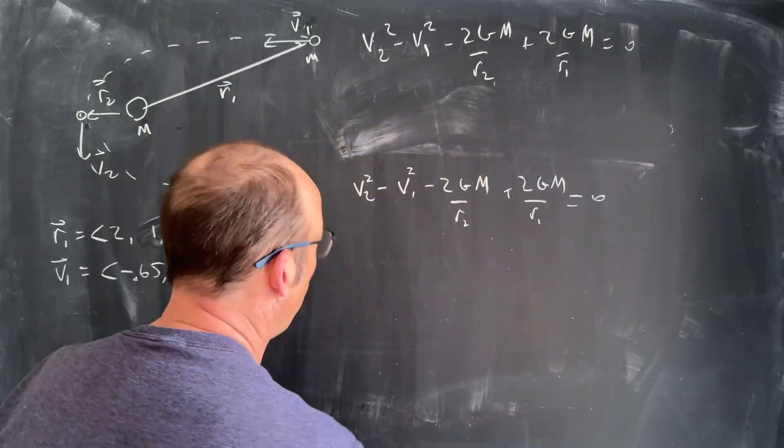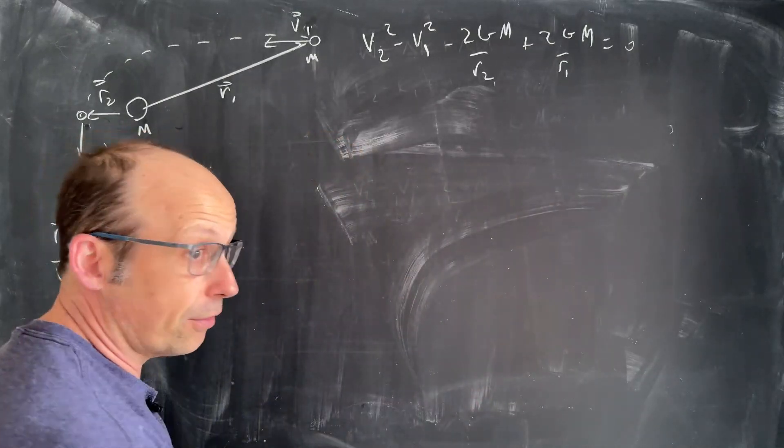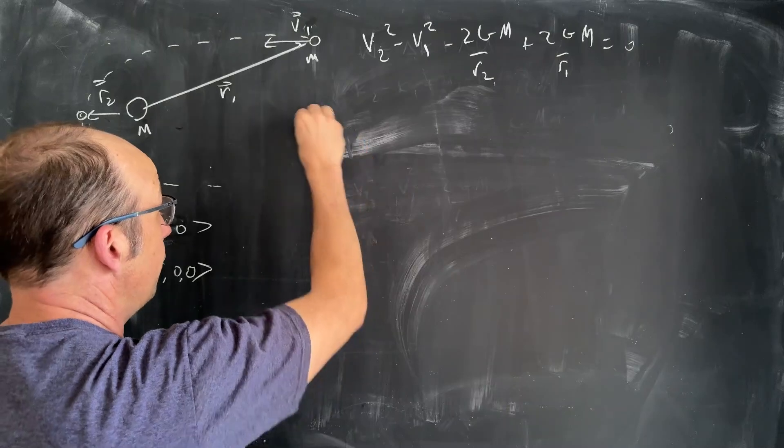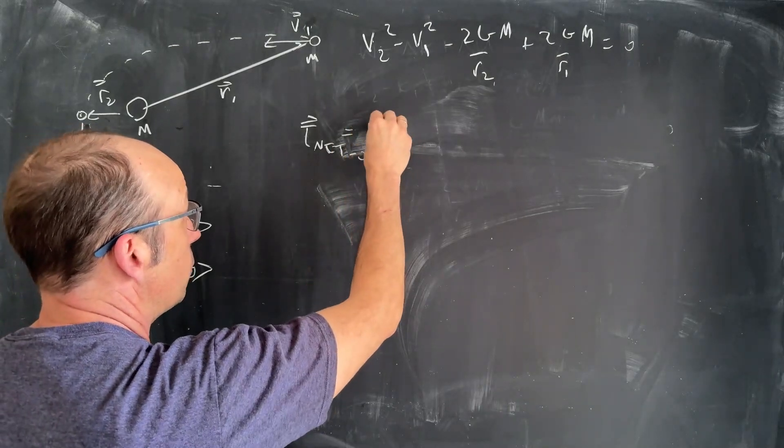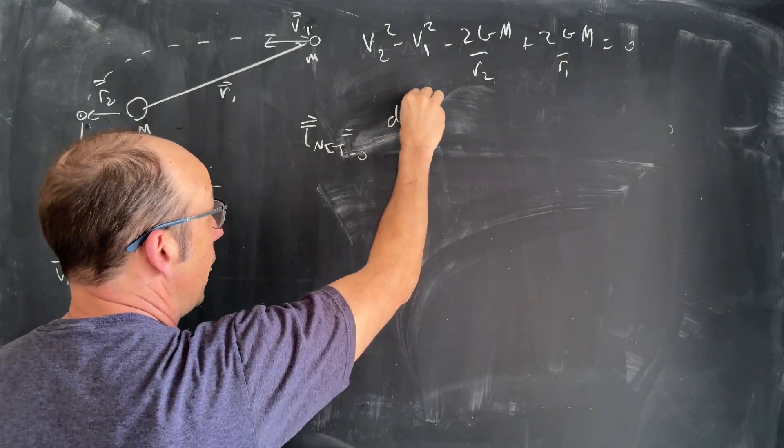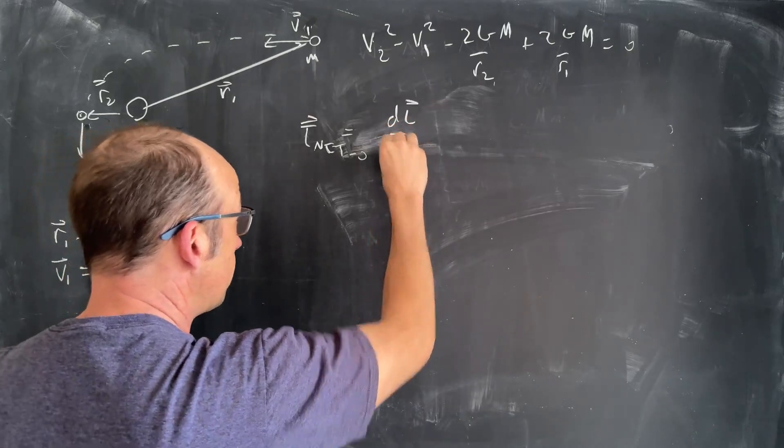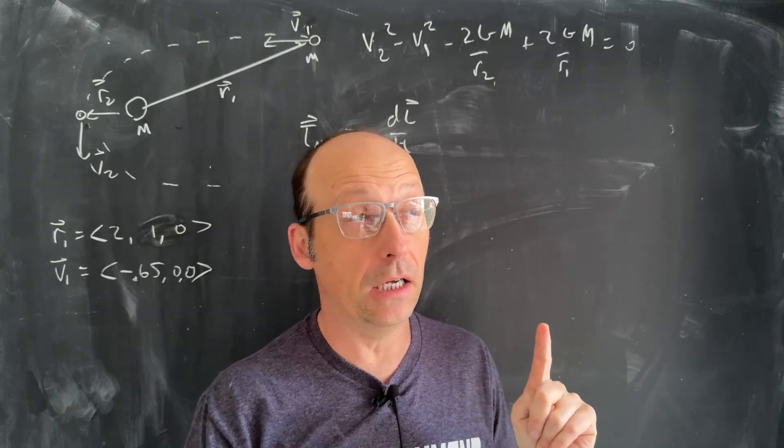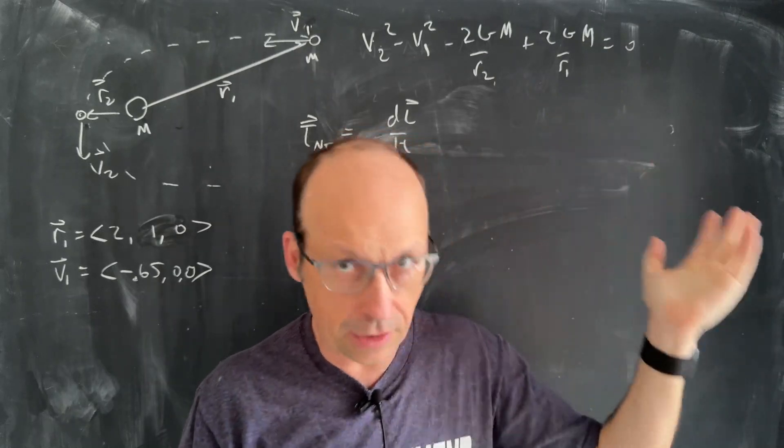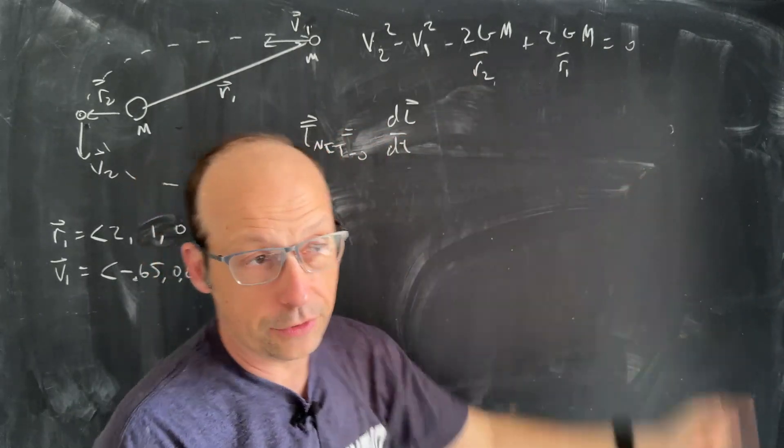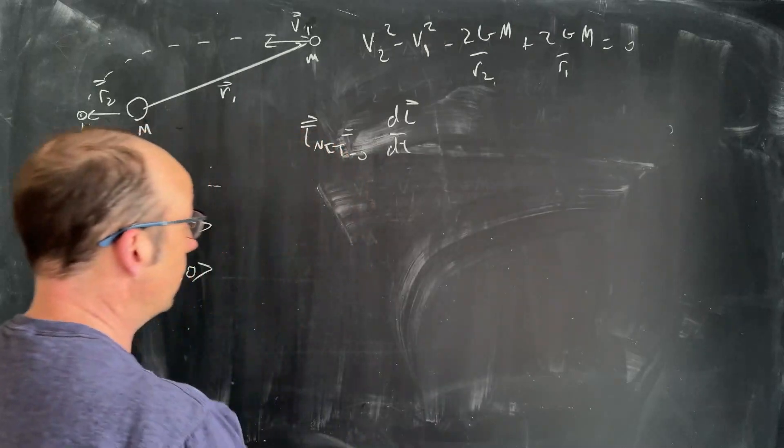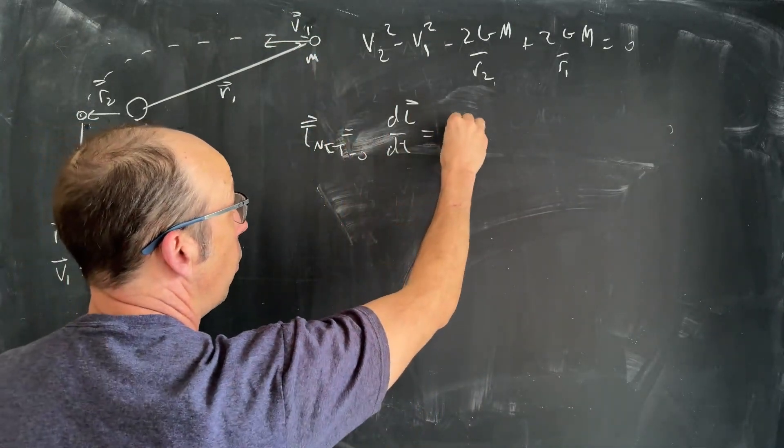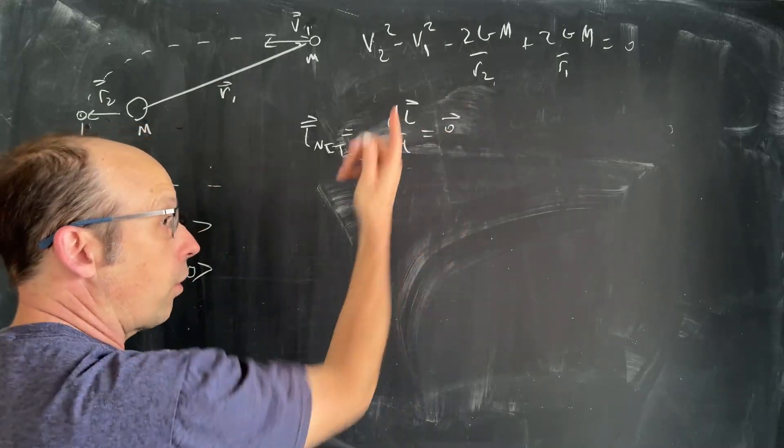Let me rewrite that equation up here. v2 squared minus v1 squared minus 2Gm/r2 plus 2Gm/r1 equals 0. So what else is conserved? What else is constant throughout this path? And the answer is angular momentum, right? So we say torque net on the system is equal to the derivative of angular momentum with respect to time.